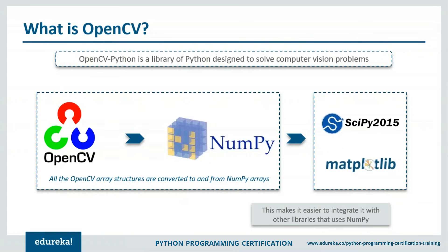OpenCV is a library used for computer vision. It was first developed in 1999 at Intel by Gary Bradsky, and the first release came out in 2000. OpenCV supports a wide variety of programming languages such as C++, Python, Java, and also supports different platforms including Windows, Linux, and more. OpenCV Python is a Python wrapper for the original OpenCV C++ implementation. In OpenCV, all images are converted to NumPy arrays, which makes it easier to integrate with other libraries that use NumPy, such as SciPy and Matplotlib. So all images will first be converted to a NumPy array — for a colored image it will be a 3D NumPy matrix, and for grayscale a 2D NumPy matrix.